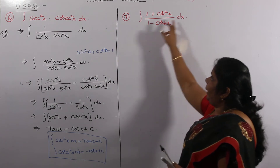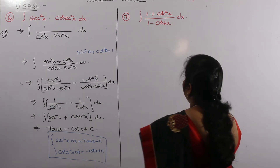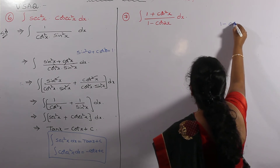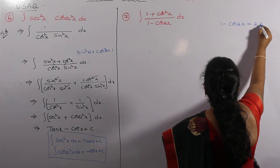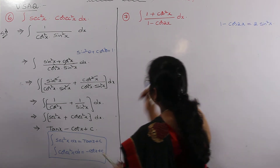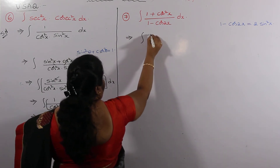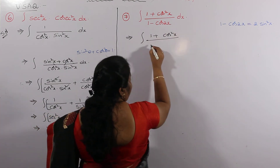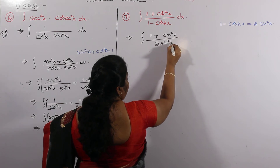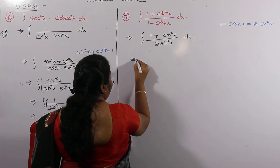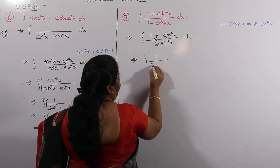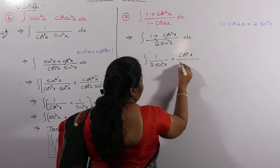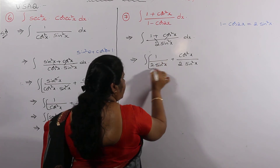Next problem: integral of (1 plus cos squared x) divided by (1 minus cos squared x) dx. We use the trigonometric formula: 1 minus cos squared x equals 2 sin squared x. Substituting, the denominator becomes 2 sin squared x. Now splitting: integral of 1 over 2 sin squared x plus cos squared x over 2 sin squared x, whole dx.